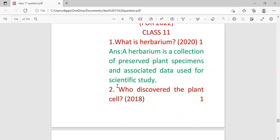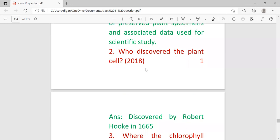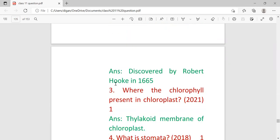First question: What is a herbarium? A herbarium is a collection of preserved plant specimens and associated data used for scientific study. This question last came in 2020. Next, who discovered the plant cell? Answer is Robert Hooke in 1665.